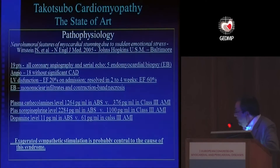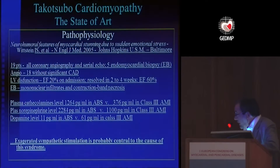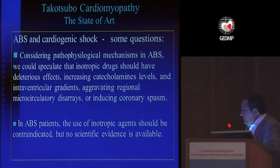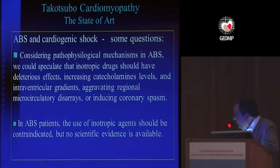In pathophysiology, this study from Baltimore involving myocardial biopsy — endomyocardial biopsy specifically — showed that all catecholamines were elevated, and this elevation compared to patients with acute coronary syndrome was very high. Exaggerated sympathetic stimulation is probably central to the cause of this syndrome, which is the conclusion of the authors after the results of this study. This has important implications for the use of inotropic drugs in this context, which is very controversial and may be dangerous.